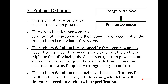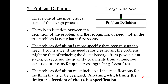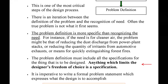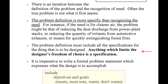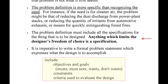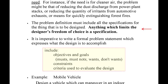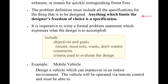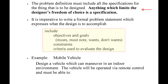The second step of the design process is problem definition. This is one of the most critical steps because it is more specific than simply recognizing the need. The problem definition must include all specifications for what we are designing. Anything that limits our freedom of choice as a designer is a specification. It is imperative to write a formal problem statement which expresses exactly what the design is to accomplish. This statement will include objectives and goals — in other words, the design must be capable of doing this and must not do that — as well as preferences as far as what the customer would like it to do and what they don't want it to do.